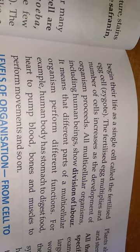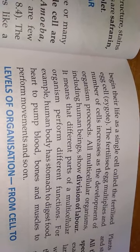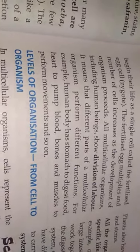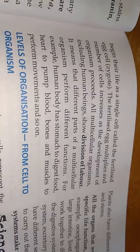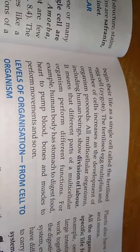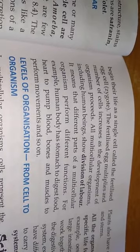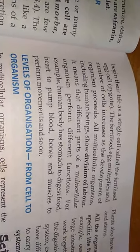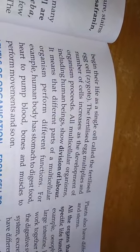Through cell division, the number of cells increases as organs develop. All multicellular organisms show division of labor, which means that different parts of the organism perform different functions. For example, the human body has a stomach to digest food, a heart to pump blood, and bones and muscles to perform movement, and so on.